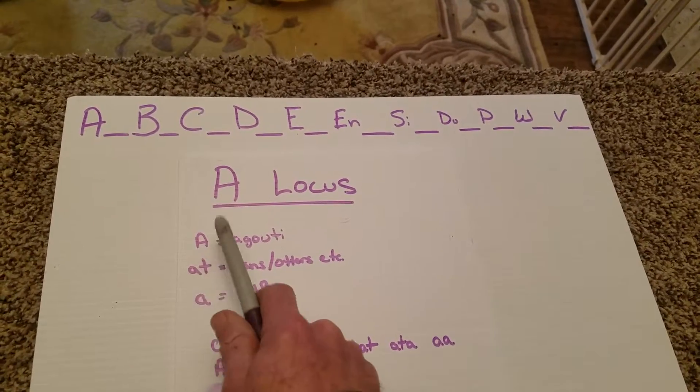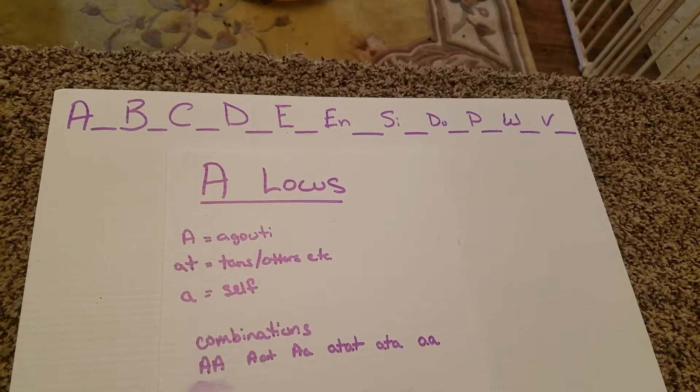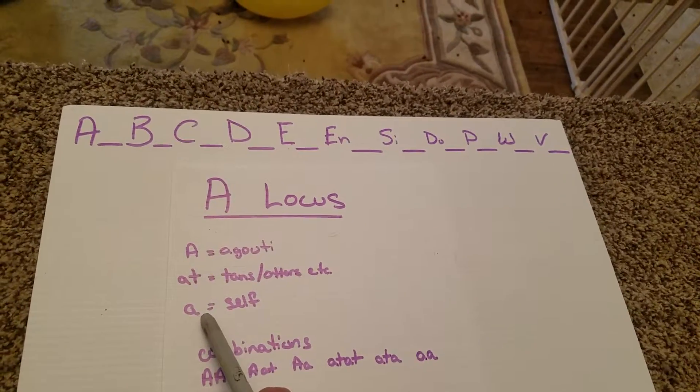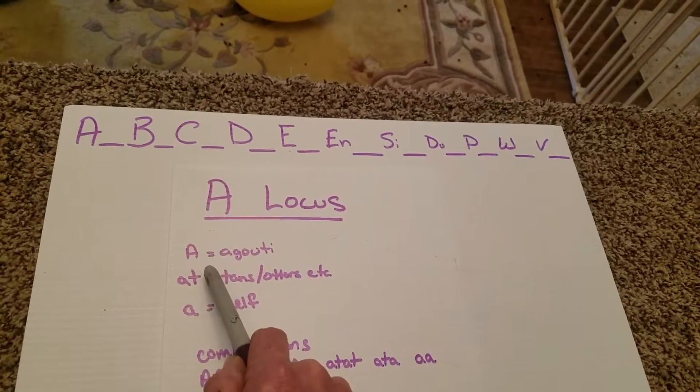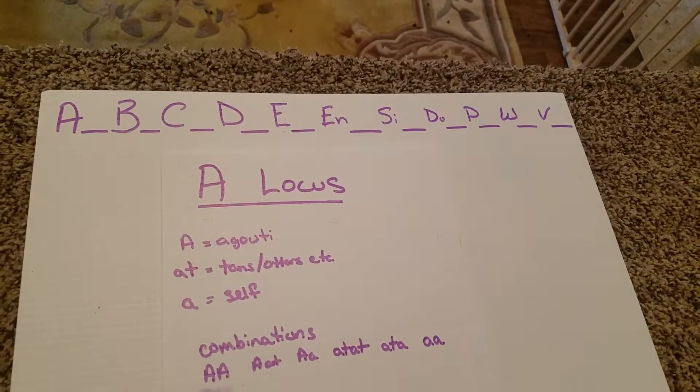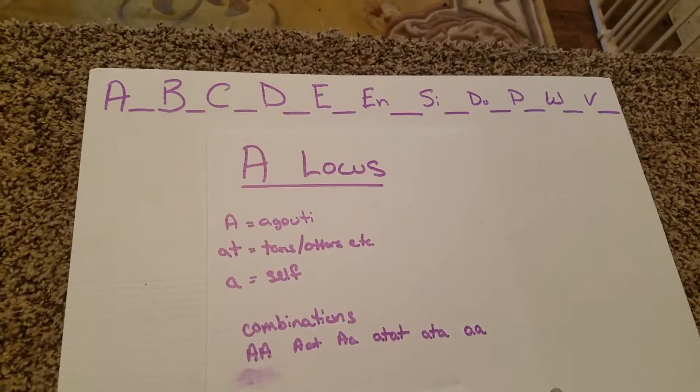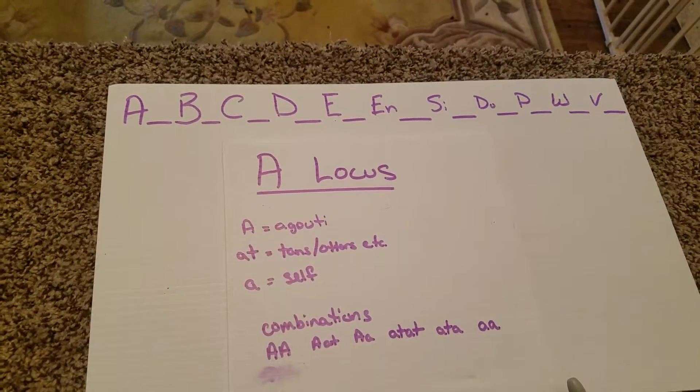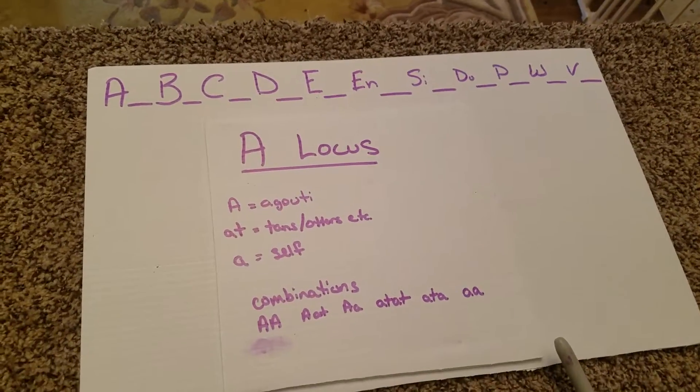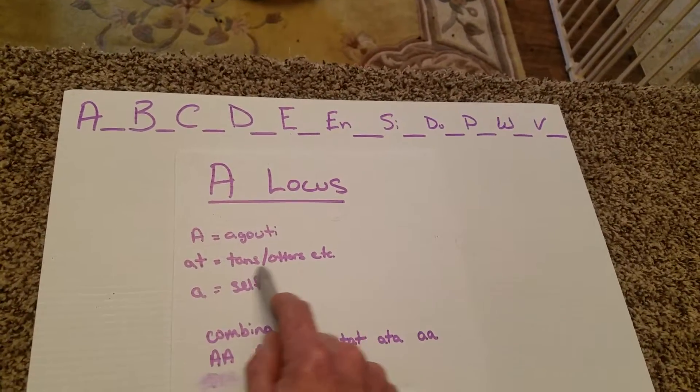The next gene, and this is in order of dominance, so agouti is going to be your most dominant gene at the A locus. The next one that is more dominant than ourself but less dominant than the agouti is our tans. It is written by a-t in lowercase, and you're going to see that in otters, your silver martins, colors of those natures. We're going to show you an example of those and how we're able to recognize a rabbit that is a-t.